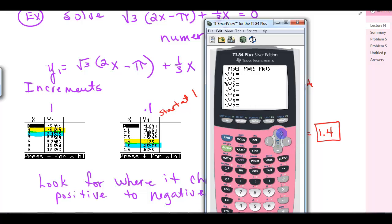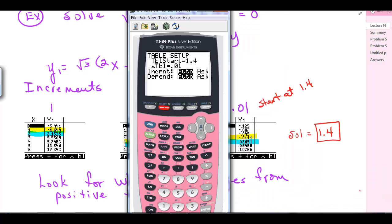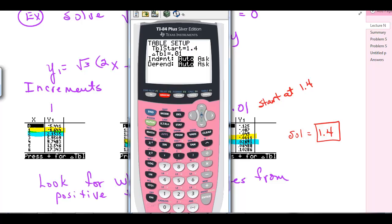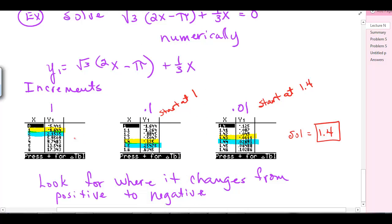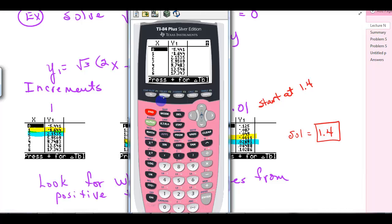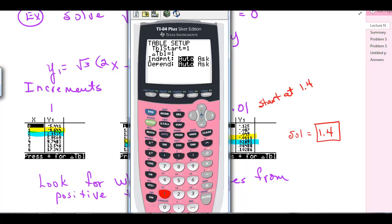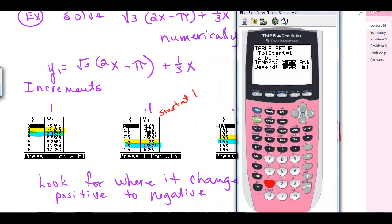I got the equation in. Now I've gone to second table set, which is above window. You want to start at 0 for the first part. Go in increments of 1. You want both of those on auto. Now go to second table. What you're looking for is where did that change from positive to negative or negative to positive? At 1, I'm at a negative value. At 2, I'm at a positive value. So I know it's between 1 and 2. My solution is between 1 and 2. Go back to second table set, now start at 1 and go in increments of 0.1.